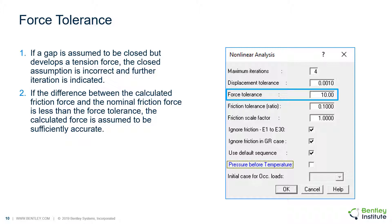Since a nonlinear analysis does not necessarily converge exactly, the force tolerance is used to check the convergence of a load case. The force tolerance is used in two ways. If a gap is assumed to be closed but develops a tensile force, the closed assumption is incorrect and further iteration is indicated.